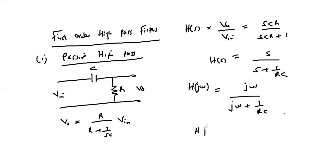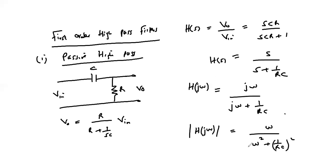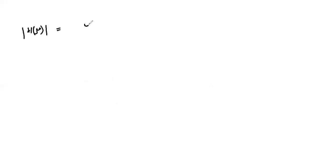The magnitude of our transfer function is given by |H(jω)| = ω over the square root of (ω² + (1/RC)²). We can test this across a number of values for ω.